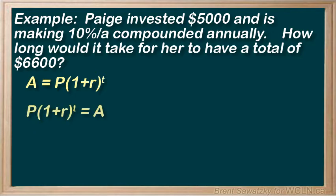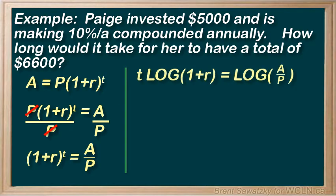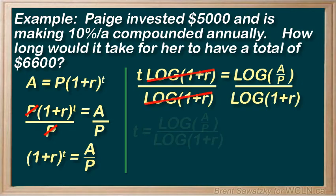Let's try to isolate t. First, we'll switch sides to get t on the left. Then let's divide both sides by P, the principal — and the P's cancel out. Normally we'd be stuck here, but now that we know about logs, we can continue. So let's log both sides, incorporate the power rule so that t is out front, and then divide both sides by log(1 + r) — and they cancel.